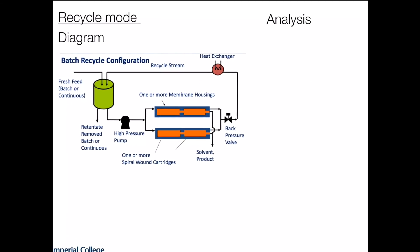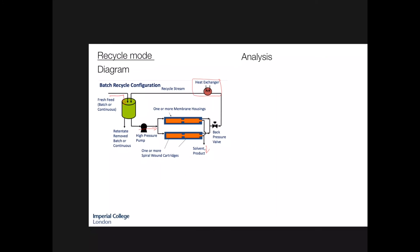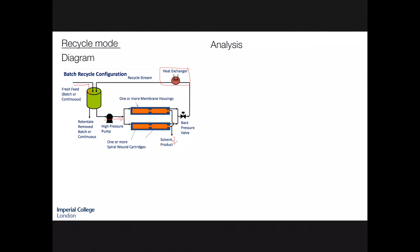So let's have a look. Here is our system. We have our feed coming in, we load the 50 cubic meters in at the beginning and pass it through the high pressure pump and into our membranes. The solvent or permeate comes out and the retentate is recycled. We're only really looking at the mass balance here, so we won't worry about doing any calculations with the heat exchanger at this point in time.